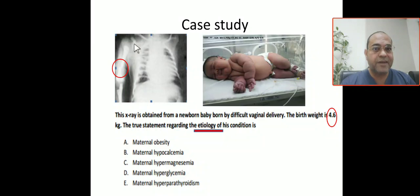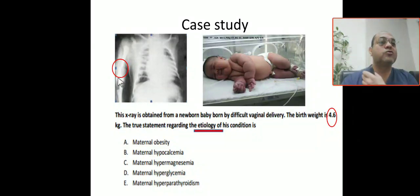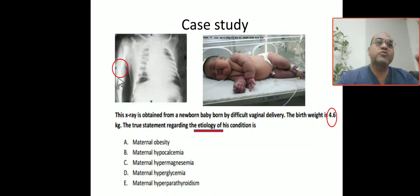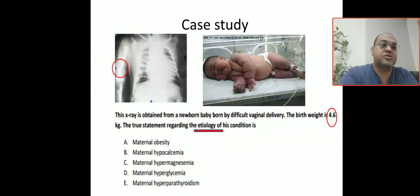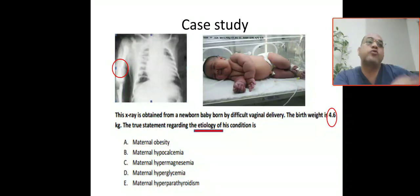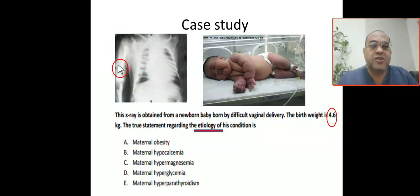This X-ray will mislead you to look for the clavicle, but the clavicle is okay here. Because of difficult labor and large baby, you have to concentrate and look for the humerus. Don't look for the clavicle alone. If you have a large baby and difficult labor, don't concentrate on the clavicle alone — you have to look for the humerus also, because fracture humerus is one of the most common birth injuries in infant of diabetic mother.